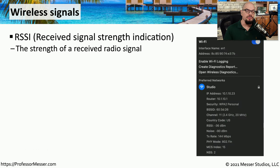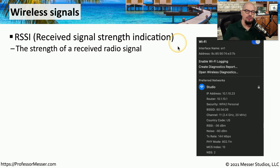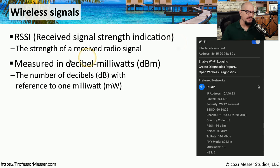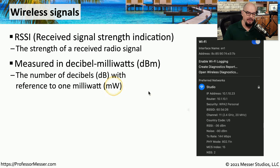There's a standard for measuring the signal received on a device — it's referred to as the RSSI, or the Received Signal Strength Indication. You should be able to look at the RSSI on every device and determine which devices are able to receive the signal better than others. The RSSI is measured in decibels per milliwatt, or dBm, referencing a single milliwatt (mW).